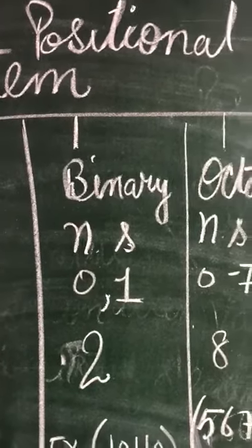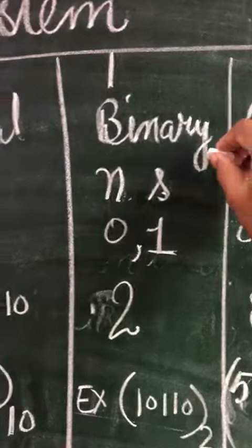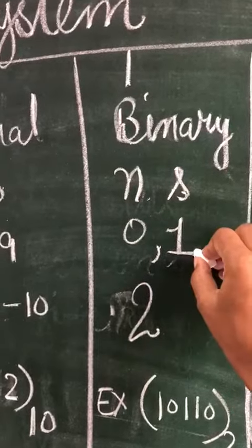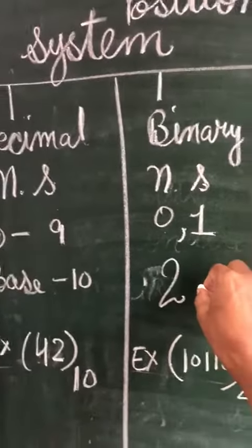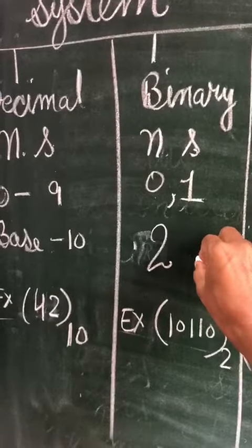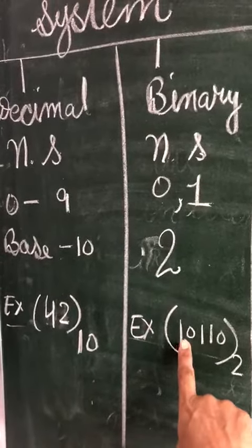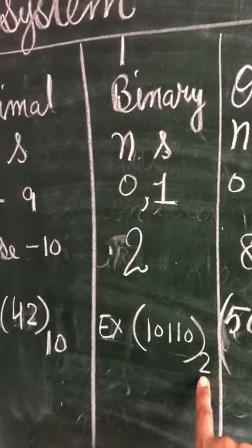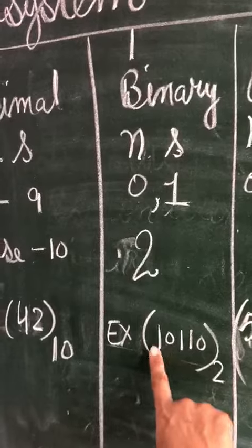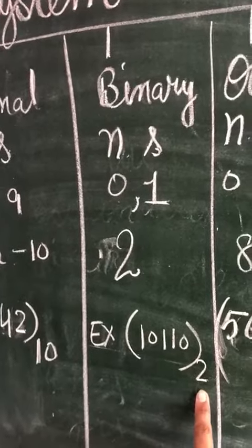The second positional number system is binary. In the binary system, we have only two digits: 0 and 1. So the base value of the binary number system is 2. For example, 10110 is a binary number and it will be denoted with the subscript of 2, meaning this value is a binary number.